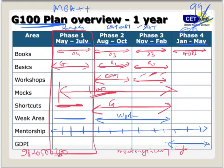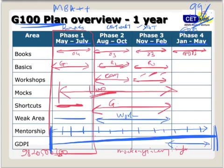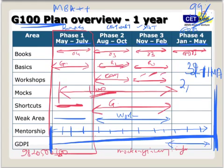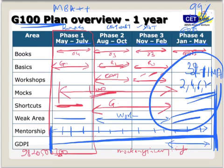Once we're done with all this, we'll start with the GDPI preparation from the month of January. So you are with me from now till May next year. The IIM Ahmedabad results have come in, around one week ago. If you followed the plan — last year we got 31-plus IIM calls, in fact 32 IIM Ahmedabad calls only. We got CMAT rank 2, rank 4, rank 6, rank 7 — all these people have been following this plan.